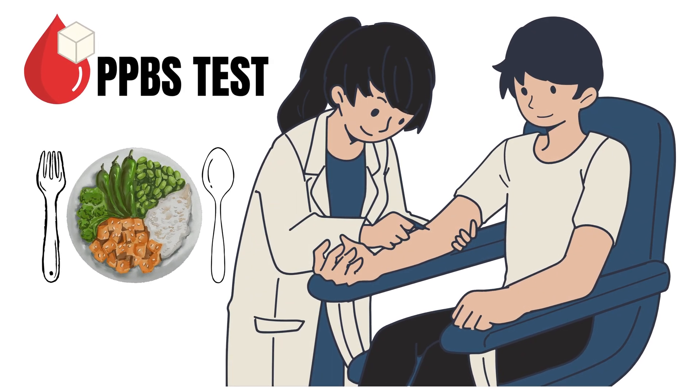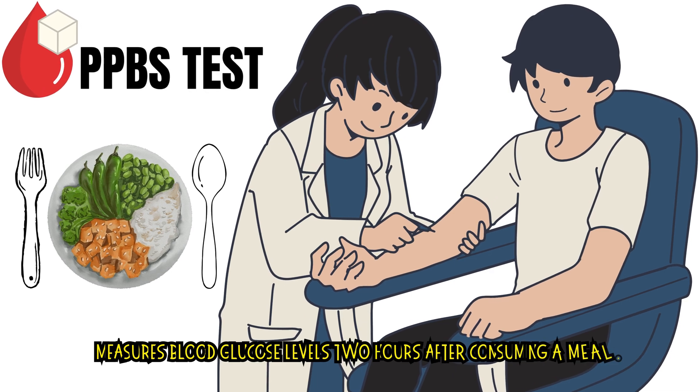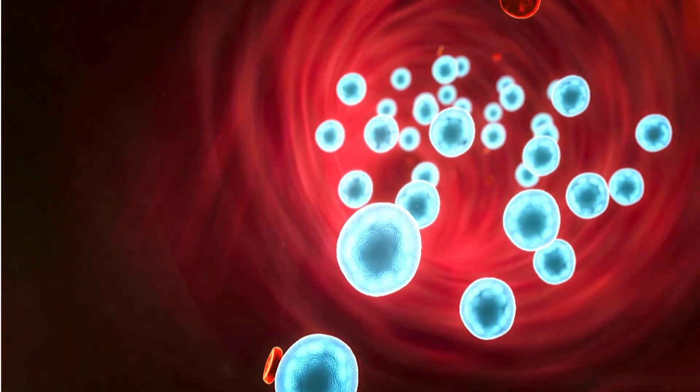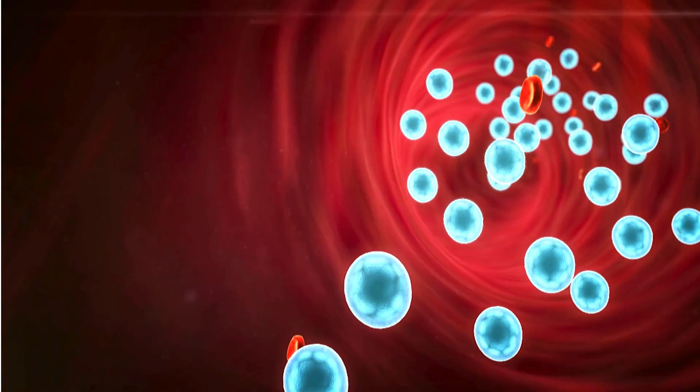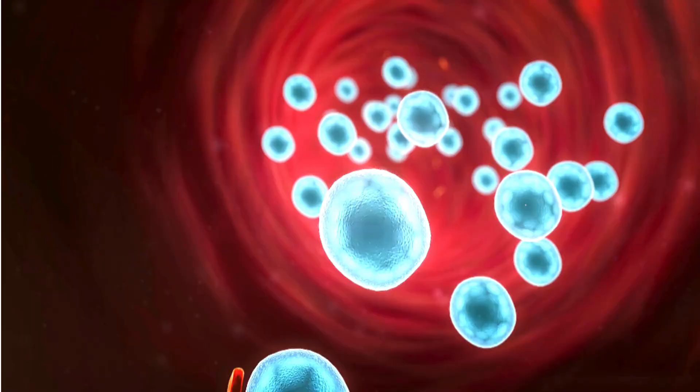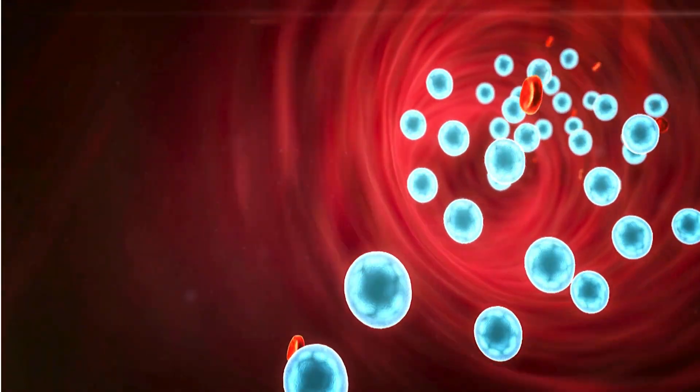The post-prandial blood sugar test, or PPBS test, measures blood glucose levels two hours after consuming a meal. It helps evaluate how effectively the body metabolizes glucose, which is crucial for diagnosing and managing diabetes mellitus, assessing insulin resistance, and identifying glucose intolerance.